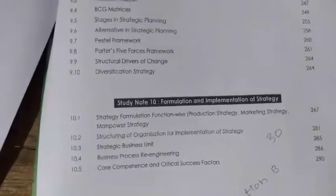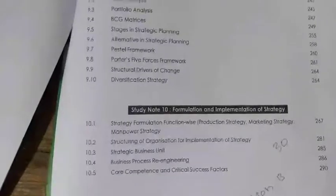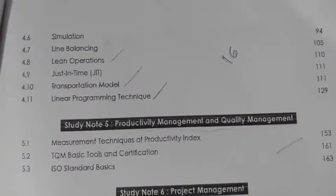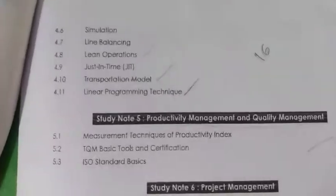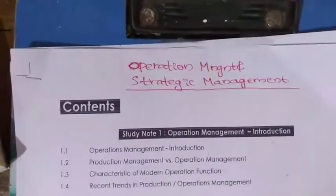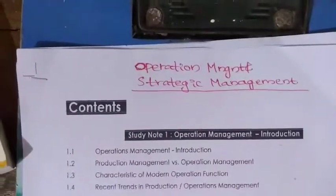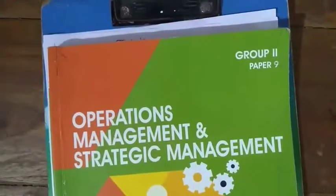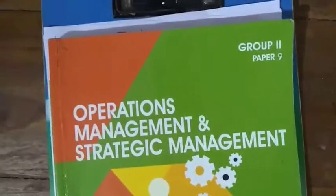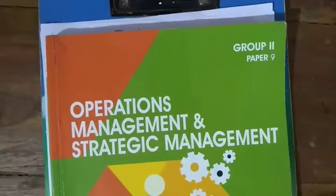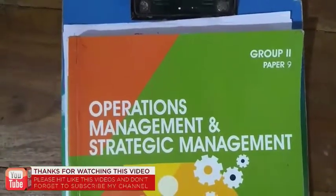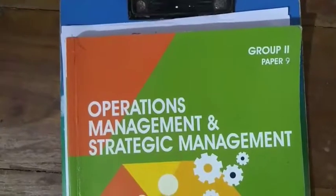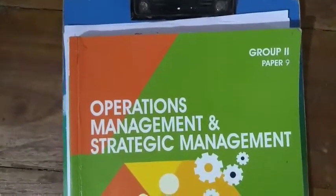So, we have to aim for a good score here — Group 2 is a simple, manageable paper covering Operation Management and Strategic Management. I'm going to upload notes on Strategic Management. Please press the bell icon for notifications, suggest this video, share this channel, and stay tuned for the next video.